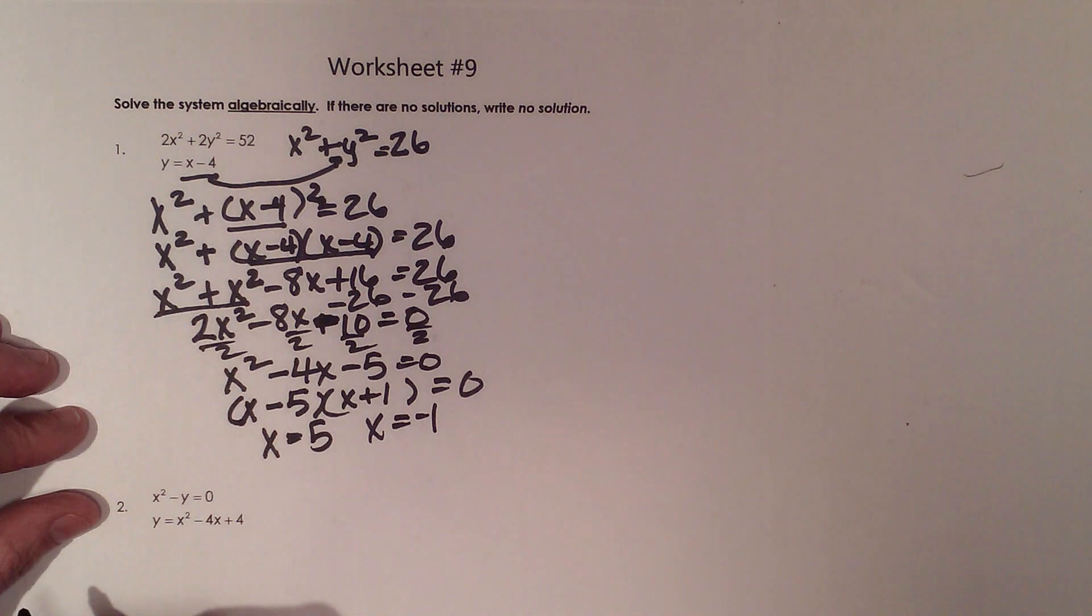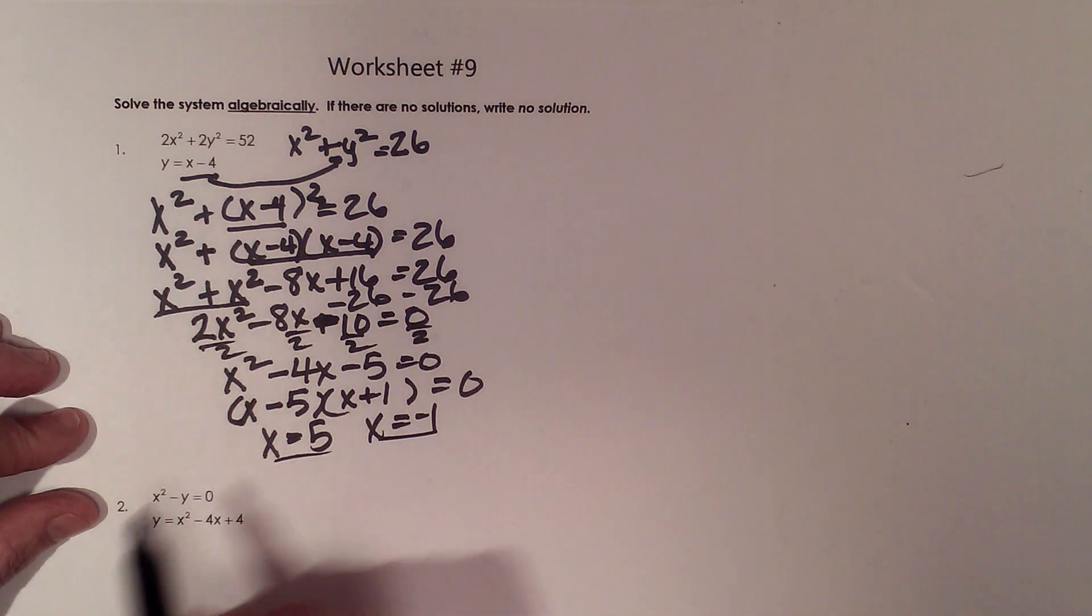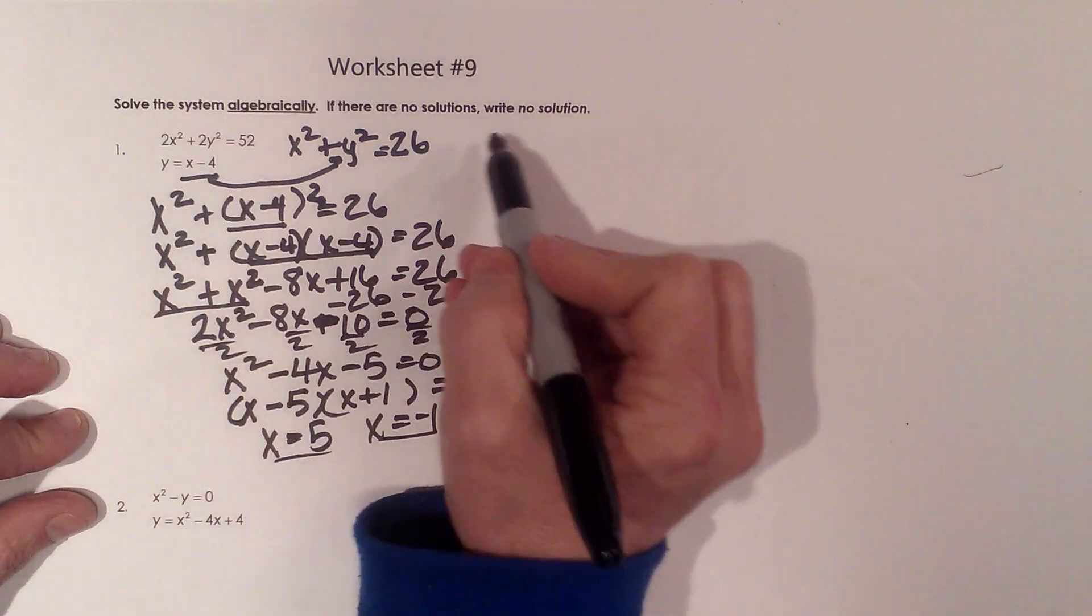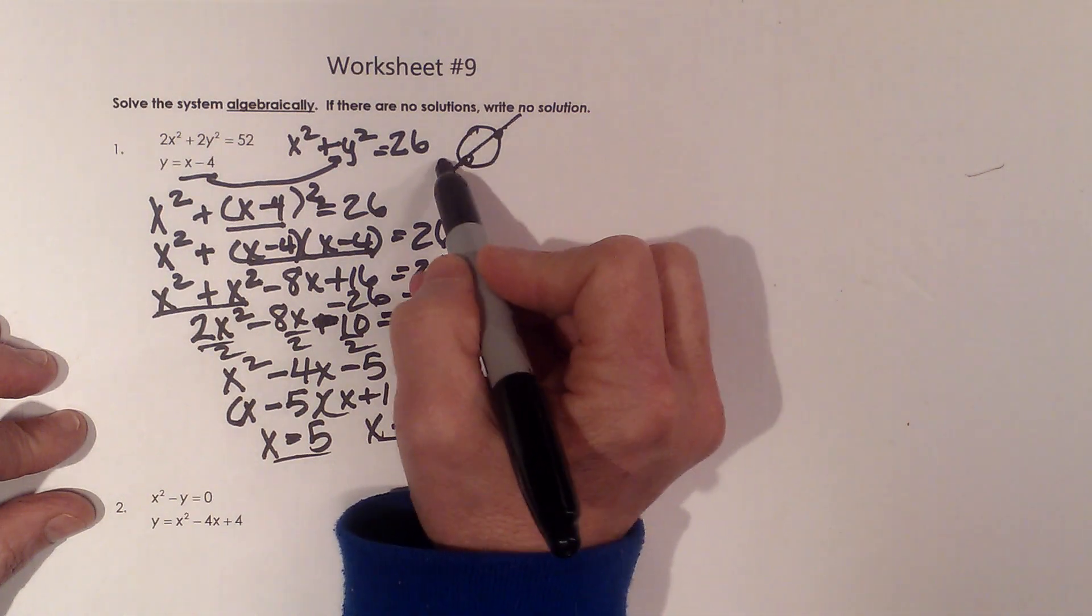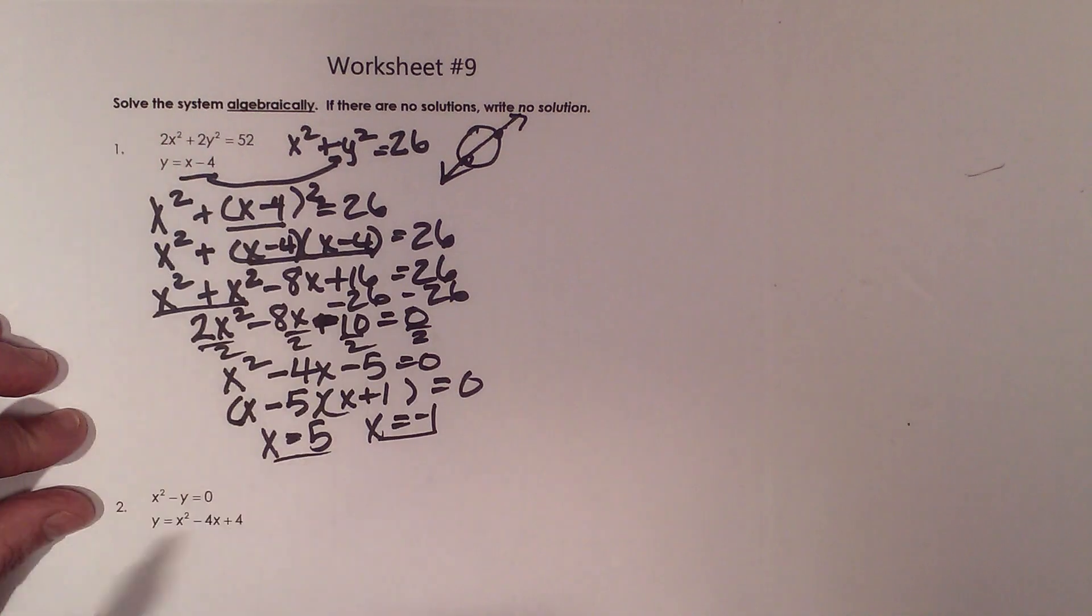So we've got a couple intersection points. Now I'm not done because this is just the x coordinate. Remember, solving a system is a point, so it's got to be an ordered pair. If we have a circle and a line, I'm trying to locate these two points. In this case, it intersects twice. So I have to find the y coordinate.